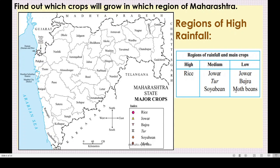Here, rice means chawal; jawar means jawari; toor means toor dal; soya bean you know; then bajra is the same; and moth beans means matki.